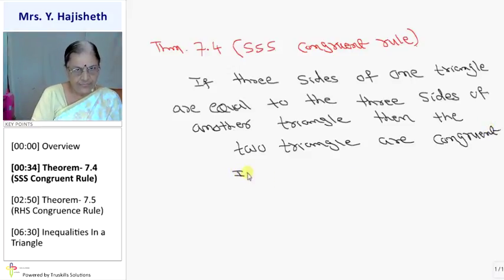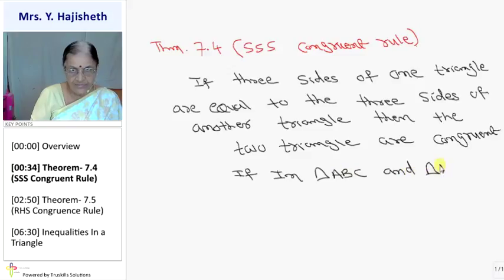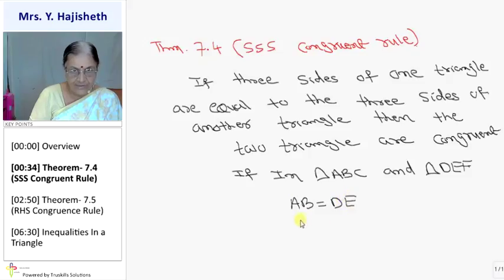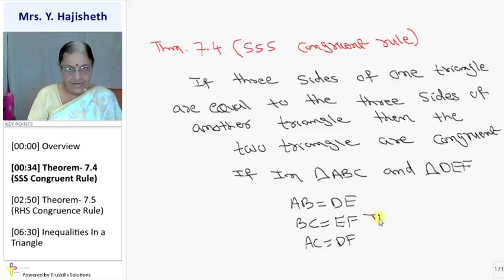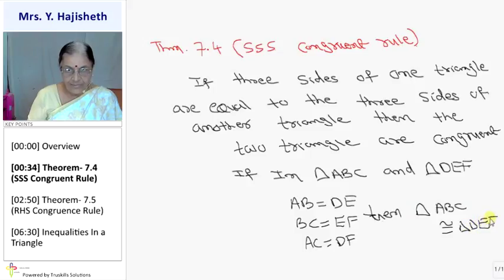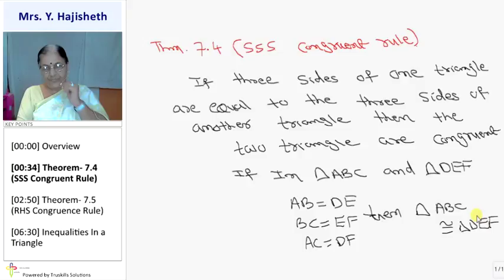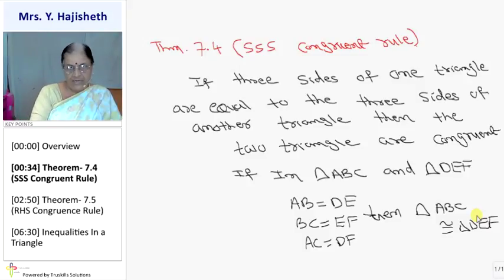That is, if in triangle ABC and triangle DEF — see the correspondence, you cannot avoid the correspondence — if AB is equal to DE, BC is equal to EF, and AC is equal to DF, then triangle ABC is congruent to triangle DEF. But suppose AB is equal to EF, then the correspondence changes accordingly. Correspondence is always important — the first vertex matches the first, and so on.